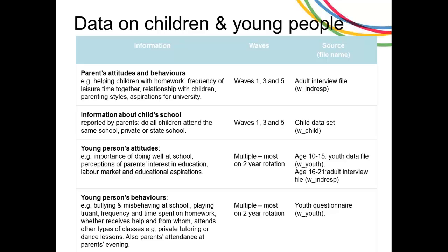From the youth questionnaire we also have young persons' behaviors, which are quite interesting. These cover things like bullying — both bullying others and being a victim of bullying — misbehaving at school, playing truant, detailed information on homework including how much time they spend on it and whether they get help, and whether they attend other classes after school such as private tutoring, dance or music lessons. Young people are also asked whether their parents attend parents' evenings at school.